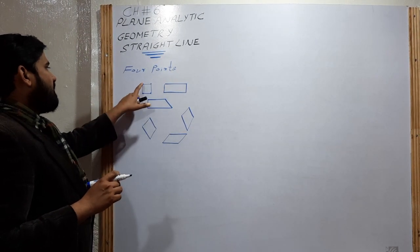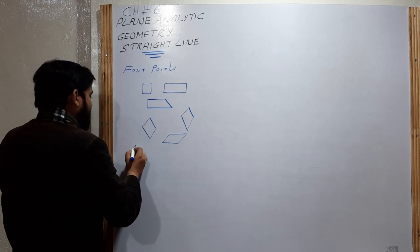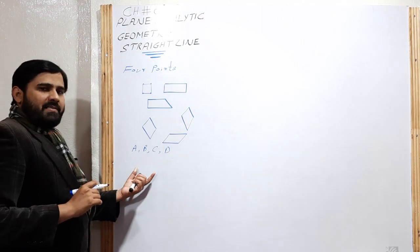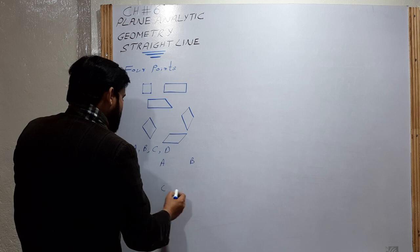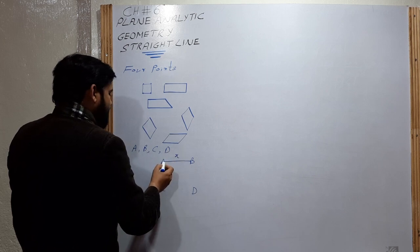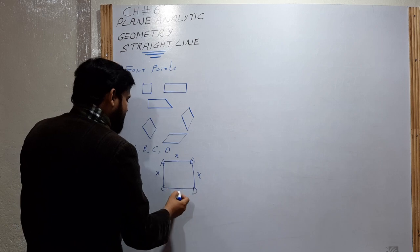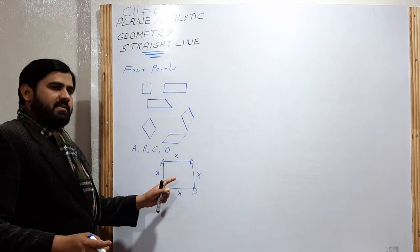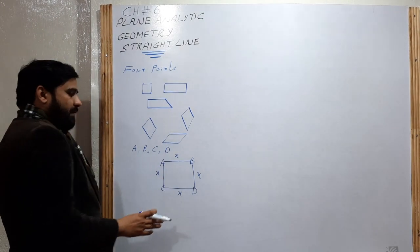For example, four points A, B, C, D are given — show that A, B, C, D represent a square. We find the distance AB, AC, BD, and CD. If all four side lengths are equal (say X), it means A, B, C, D may represent a square. But it may also be a rhombus because a rhombus also has four equal sides.